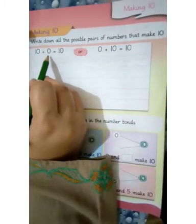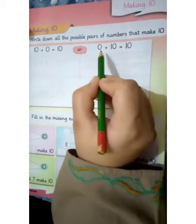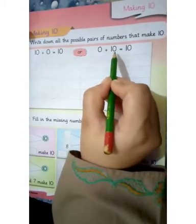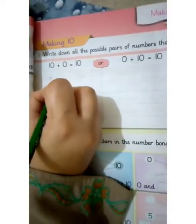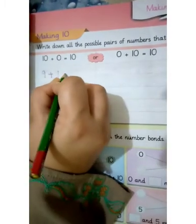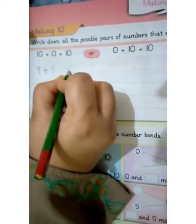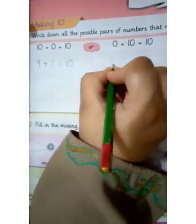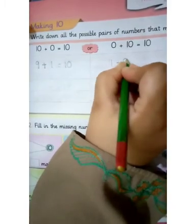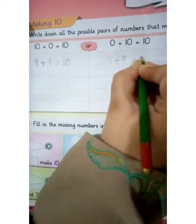10 plus 0 equals 10. 0 plus 10 equals 10. Now, 9 plus 1 make 10. 1 plus 9 make 10.